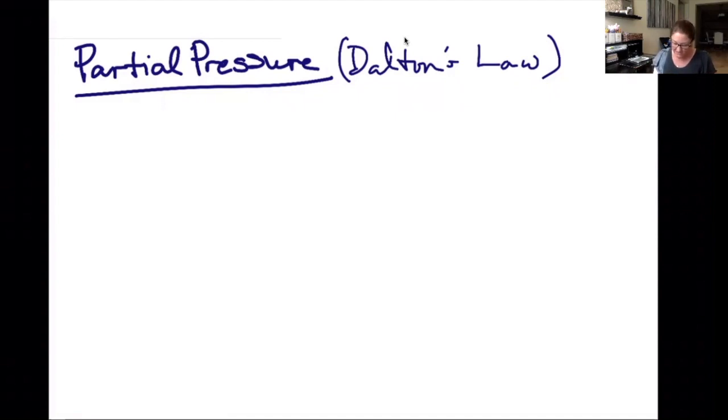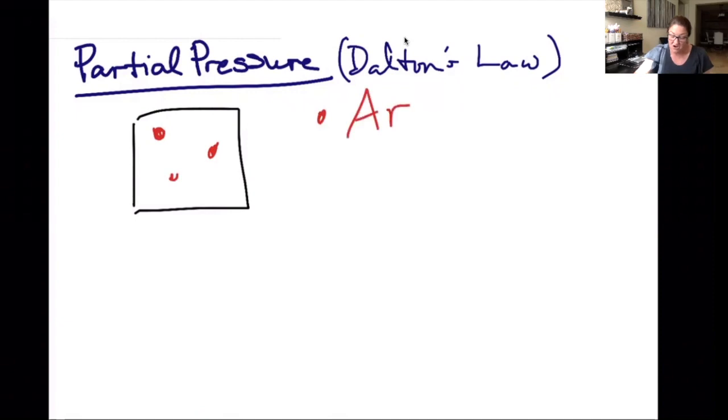Here's one of the ways we can imagine it. Suppose I have a container, and in that container I have five molecules. I'm going to say that three of the molecules are argon, and two of the molecules are xenon. How many molecules are there total? Five.